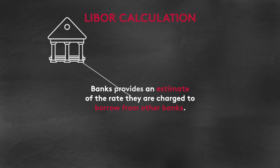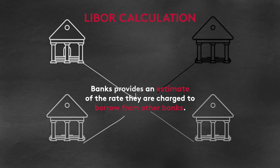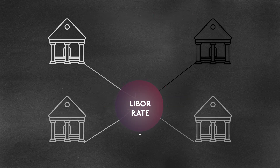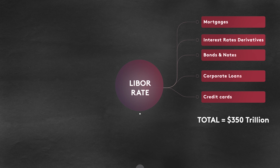LIBOR is aimed to represent the interbank lending rate. There is around $350 trillion of derivatives and products linked to LIBOR — so that's mortgages, interest rates, derivatives, a huge variety of things.